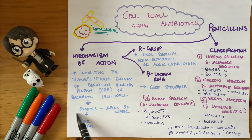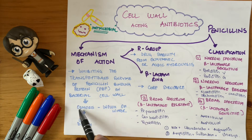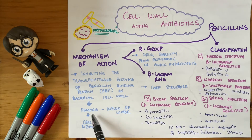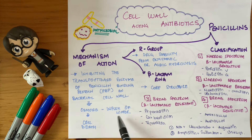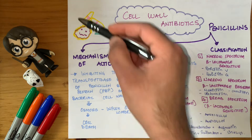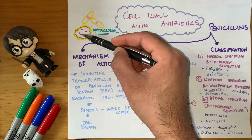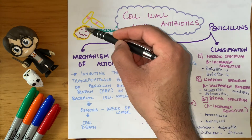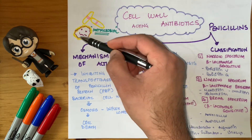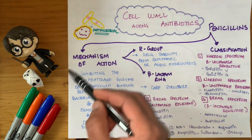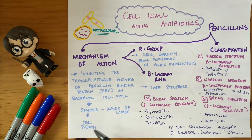The pores in the cell wall cause osmosis. Once osmosis occurs, there is a large influx of water from outside the cell going inside the cell, which drowns the cell alive, causing cell death.